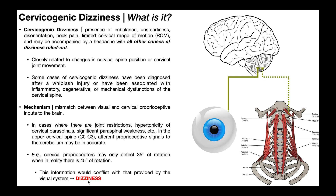It's a very similar concept to a vestibular hypofunction, except in that case it's a mismatch between visual and vestibular input. Here, it's a mismatch between visual and proprioceptive input — specifically proprioceptive input coming from the deep neck flexor and, in some cases, deep neck extensor muscles on the other side — and that produces dizziness.